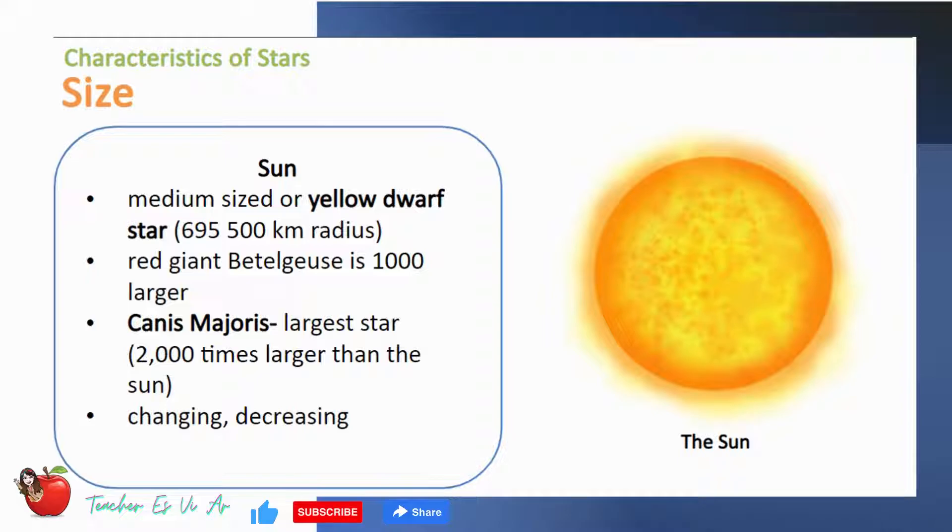The sun is a medium-sized or yellow dwarf star about 695,500 kilometers radius. There are so many larger stars than the sun. The red giant Betelgeuse is 1,000 times larger. Canis Major, the largest star, is 2,000 times larger than the sun. The size of the sun is changing and decreasing through time.